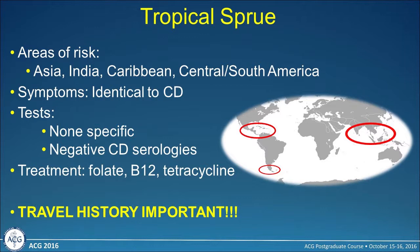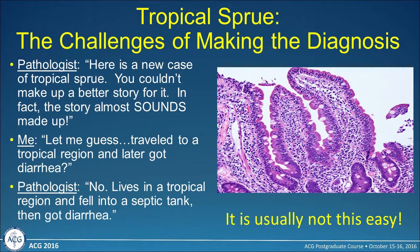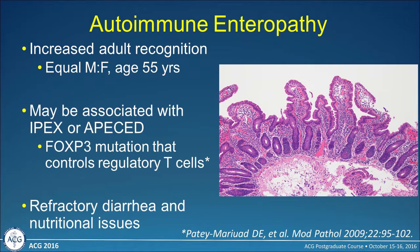Tropical sprue can look exactly like celiac disease clinically, and unfortunately there's no specific test to make this diagnosis. These patients will have negative serologic markers. This is a really important diagnosis to make because they don't need a lifelong gluten-free diet — they usually need vitamin replacements for megaloblastic anemia and antibiotic therapy. Travel history is very important and often under-recognized. One memorable case involved a patient who lives in a tropical region and fell into a septic tank, then developed diarrhea. The diagnosis is usually not this easy; a careful travel history is essential.